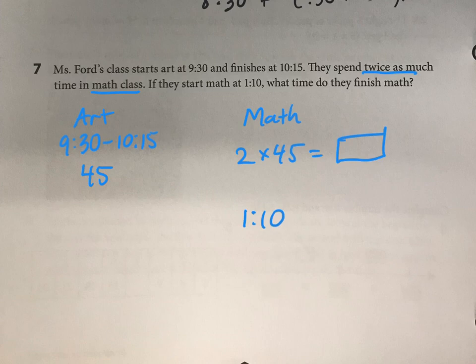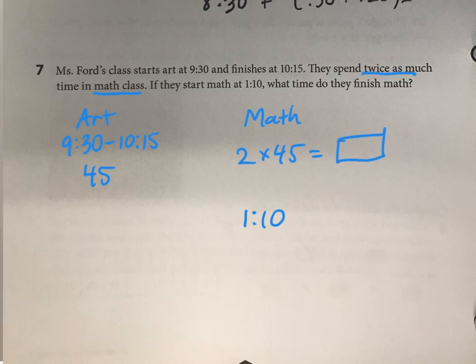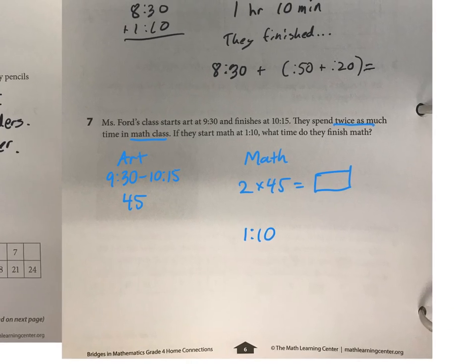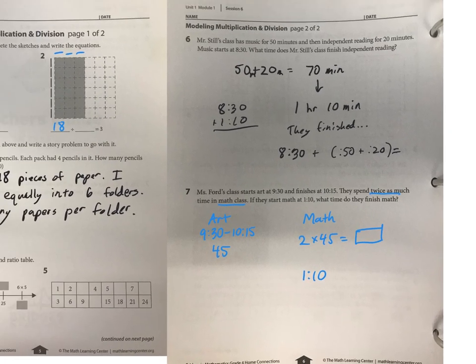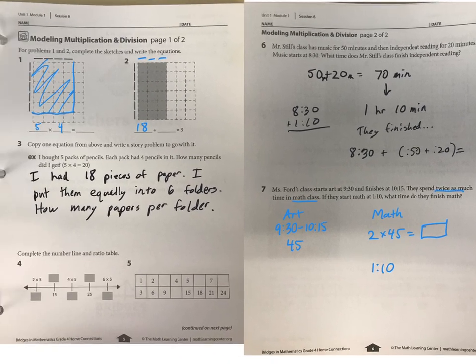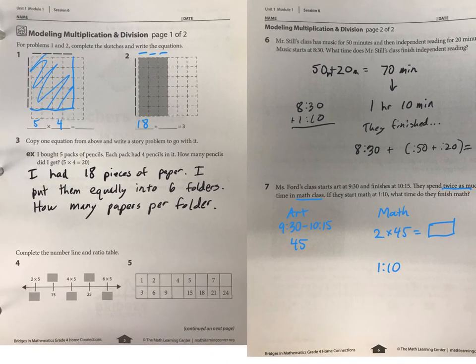Convert whatever you get into hours and minutes, add it to 1:10, and that's what time they will finish math for the answer. Sort it out, write a sentence, and try to do an equation if you can figure one out. That is it for this — thank you and goodbye!